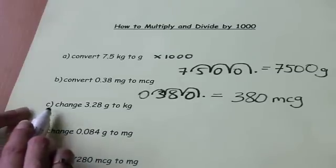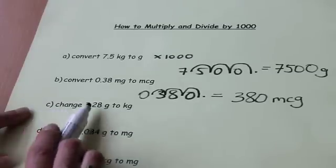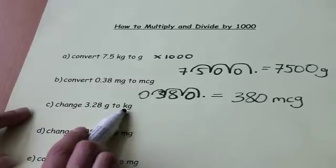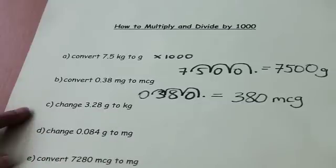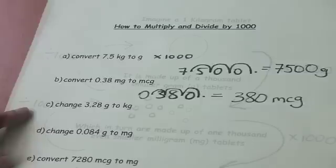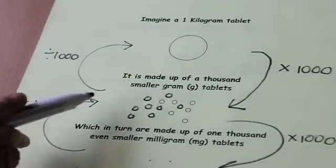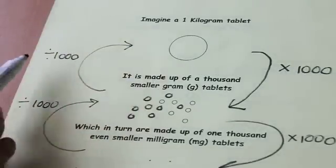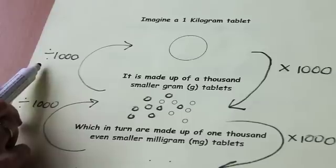Let's look at part C. Change 3.28 grams to kilograms. So once again we can use our chart to decide whether we're going to multiply or divide. So this time we can see we're going from grams to kilograms and so we're going to divide by 1,000.